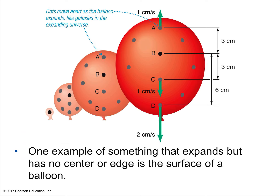One example of something that expands but has no center or edge is the surface of a balloon. From any point on the balloon, other points that are further away are moving away faster — a dot 6 centimeters away moves twice as fast as one 3 centimeters away. That doesn't mean any one point is special; from any point's perspective, everything is racing away. That's why further galaxies move away faster from us — not because our galaxy is the center, but because that's how uniform expansion works.